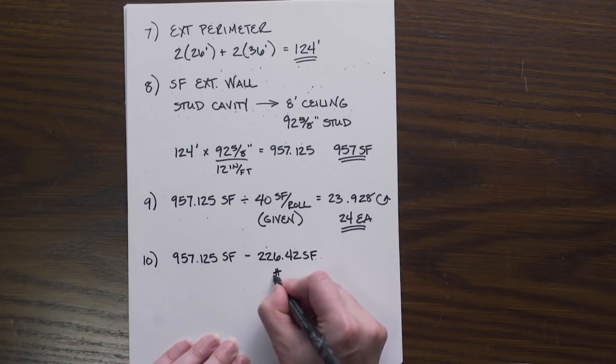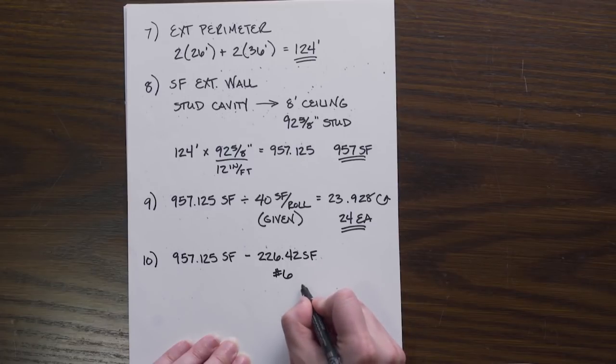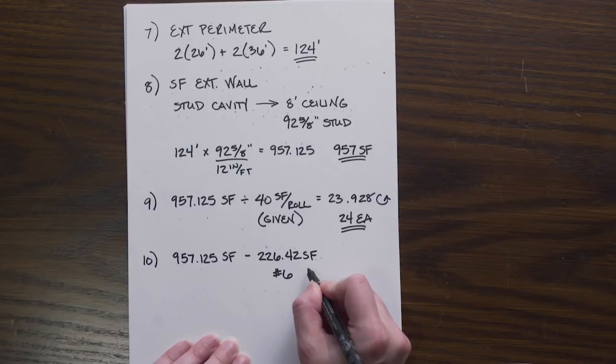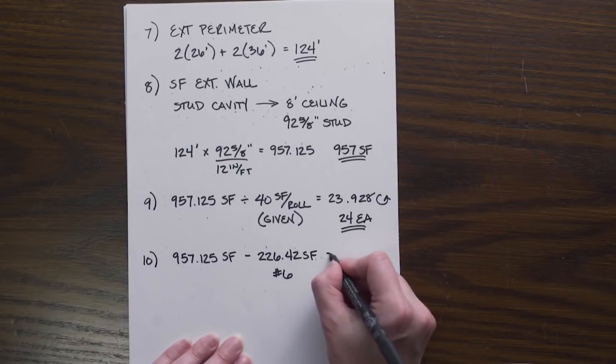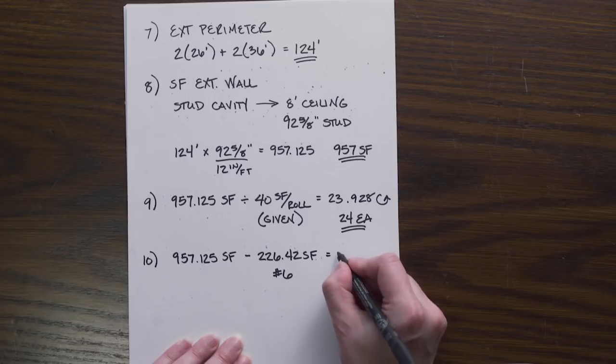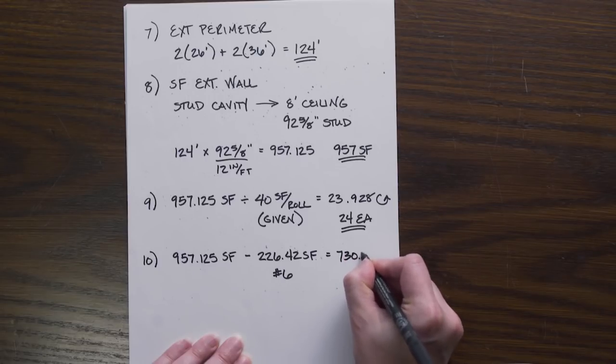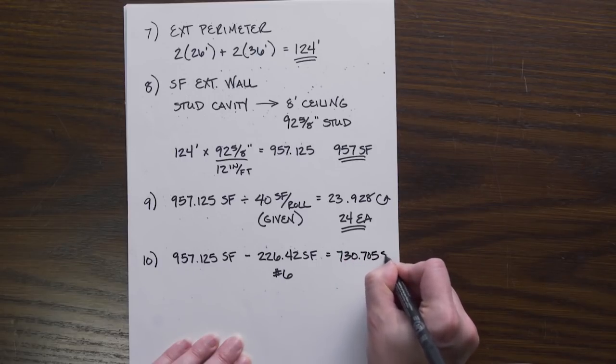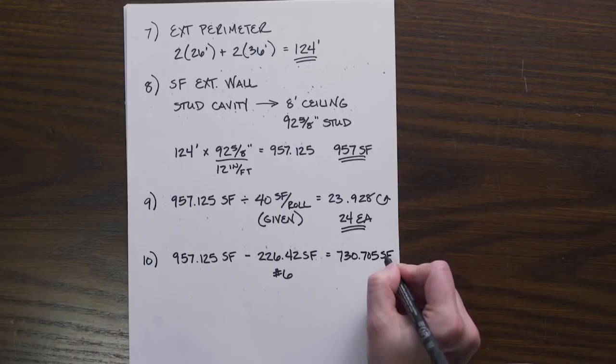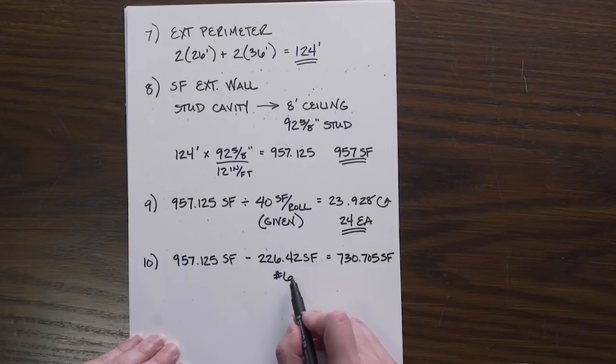If we wanted to try and find that, we can simply take the 957.125, which is the total square footage, and subtract out the 226.42 square footage. This came from number six in the first problem set when we totaled all of the openings up: 226.42 square feet.